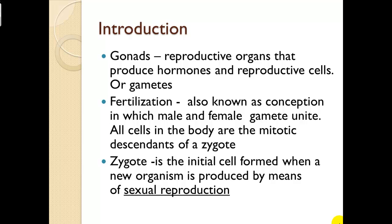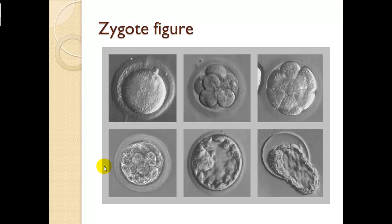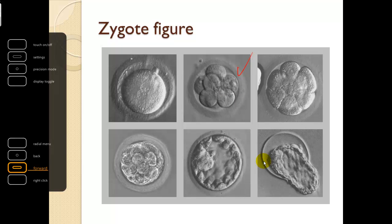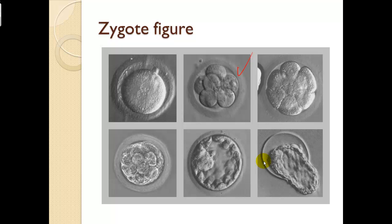Introduction. Gonads are reproductive organs that produce hormones and reproductive cells, or gametes. Fertilization, also known as conception, is when a male and a female gamete unite. All cells in the body are the meiotic descendants of a zygote. A zygote is the initial cell formed when a new organism is produced by means of sexual reproduction — this is a picture of a zygote showing multicellular division, which will divide until it becomes the organism that you are today.